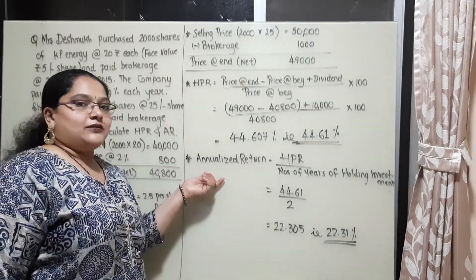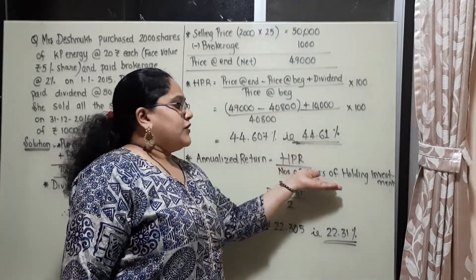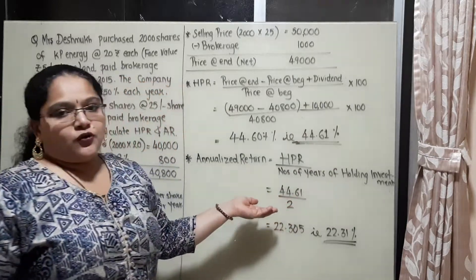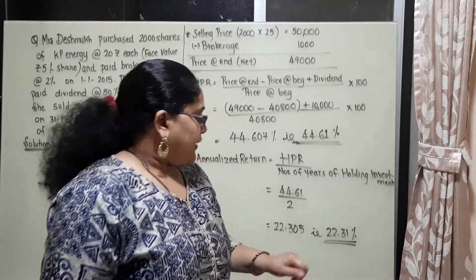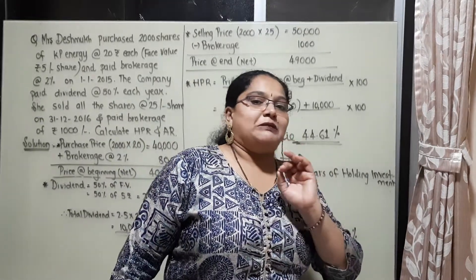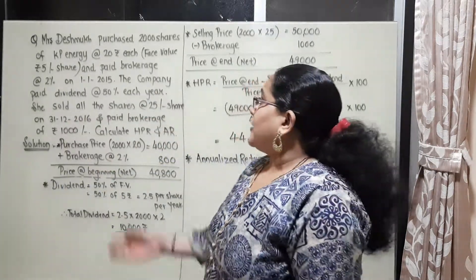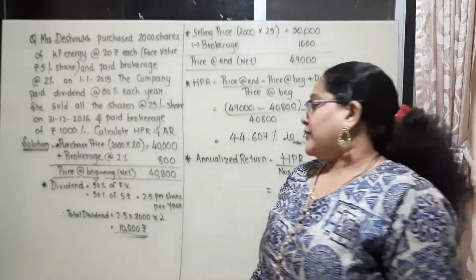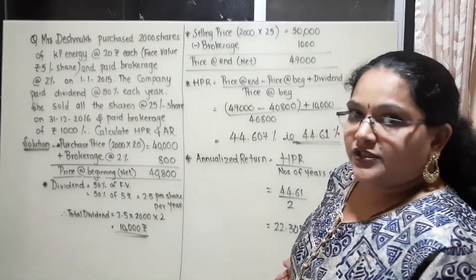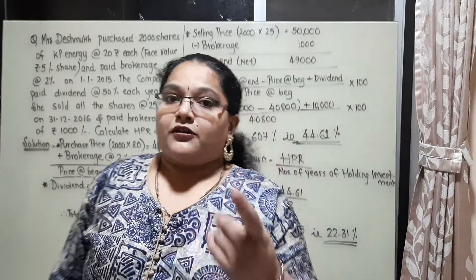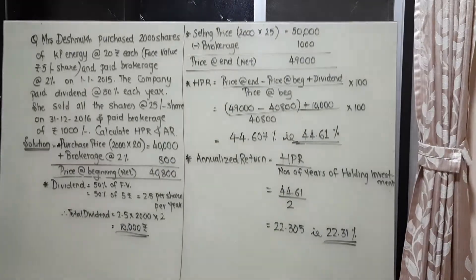Now we calculate the annualized return — meaning how much return she got per year. Simple: holding period return divided by number of years of holding investment. She held for 2 years, so 44.61 divided by 2 gives 22.305, that is 22.31% as her annualized return. She is a good investor because she got a return more than FD and more than mutual funds. Thank you.